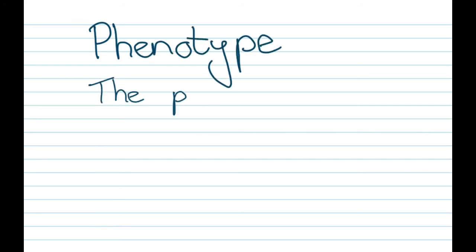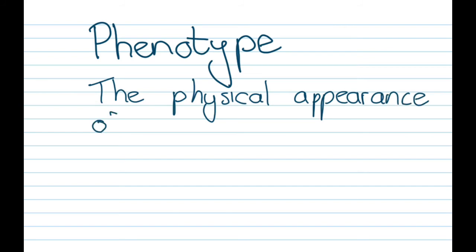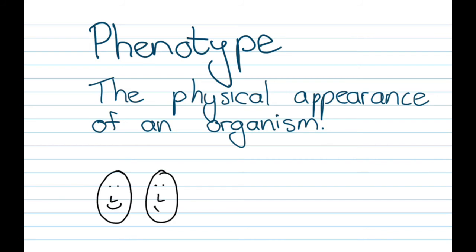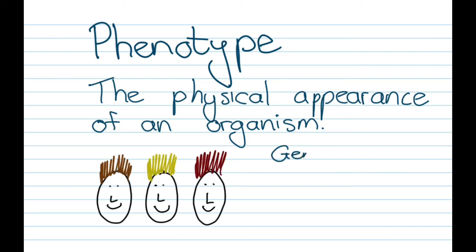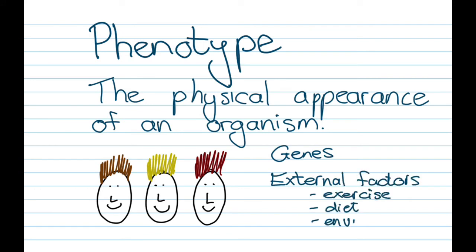Then we look at phenotype. Phenotype has to do with the physical characteristics of an organism. This could be something like how tall you are, your eye color, your hair color — things that can either be caused by your genetic makeup, or by external factors like exercise, diet, or even the environment.